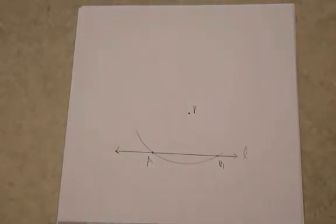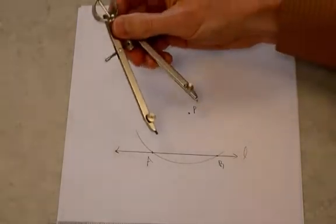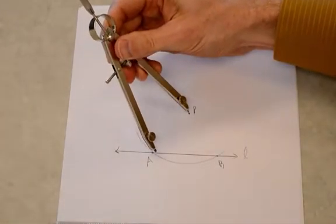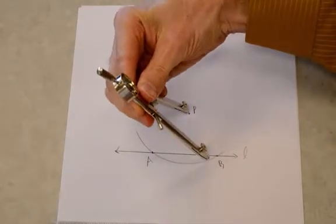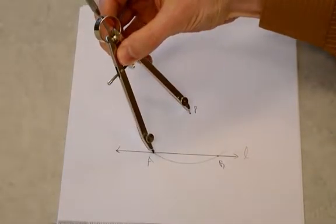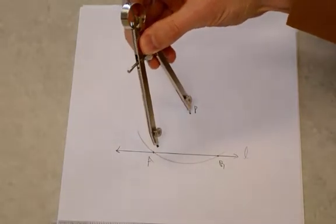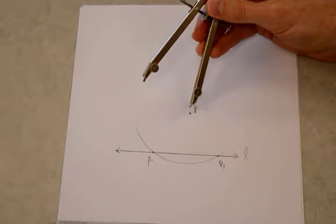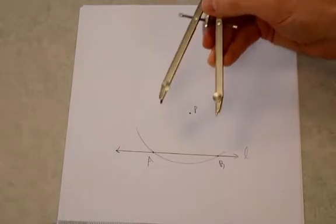Alright, so what we just did with our compass is we measured so that the distance from point P to point A is the same as the distance from point P to point B. And by doing that, we're automatically creating a situation where this point P is going to have to lie on the perpendicular bisector of segment AB.